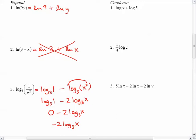On the right, we're going backwards. We're condensing. So now I have two logs that are being added together. So if I condense them into one log, I would have to multiply those two things, in this case the 5 and the x.